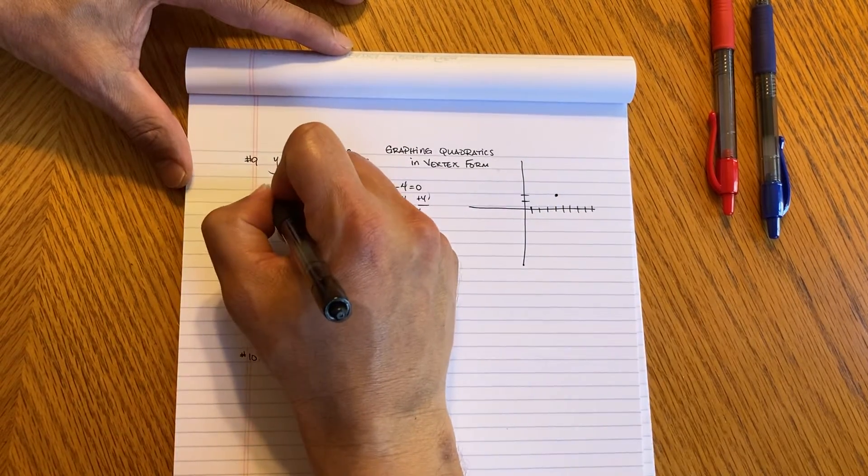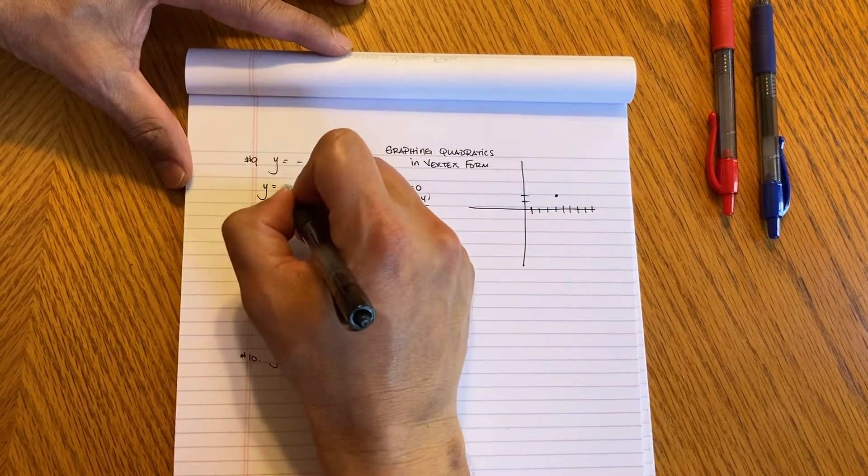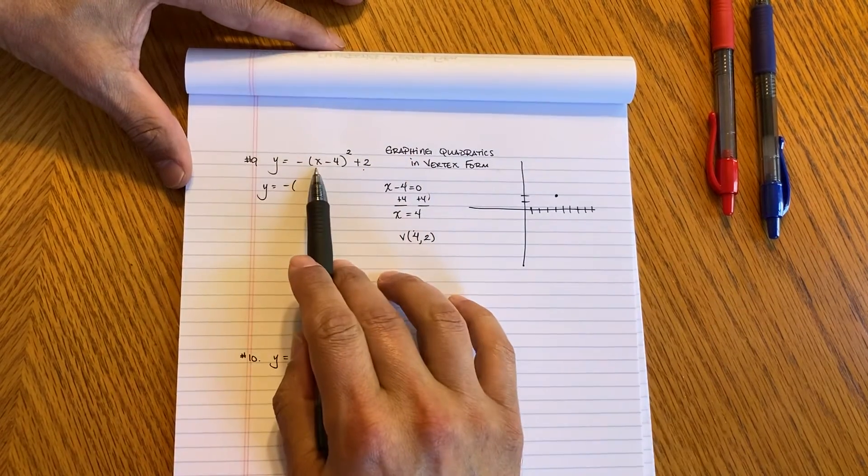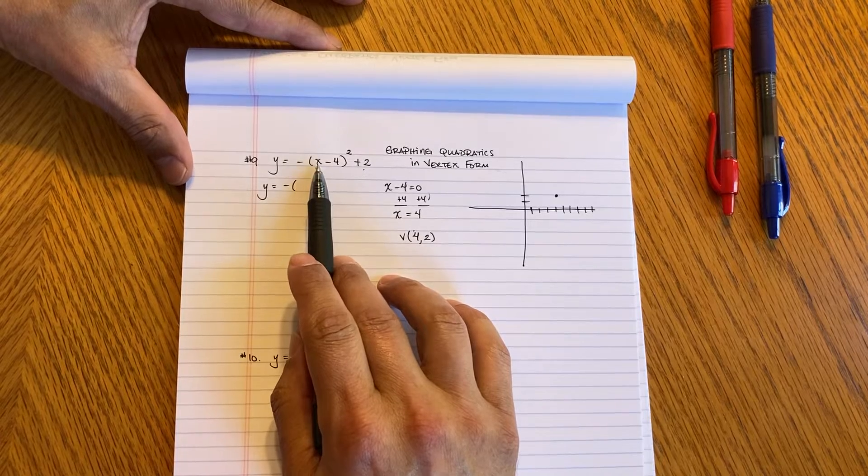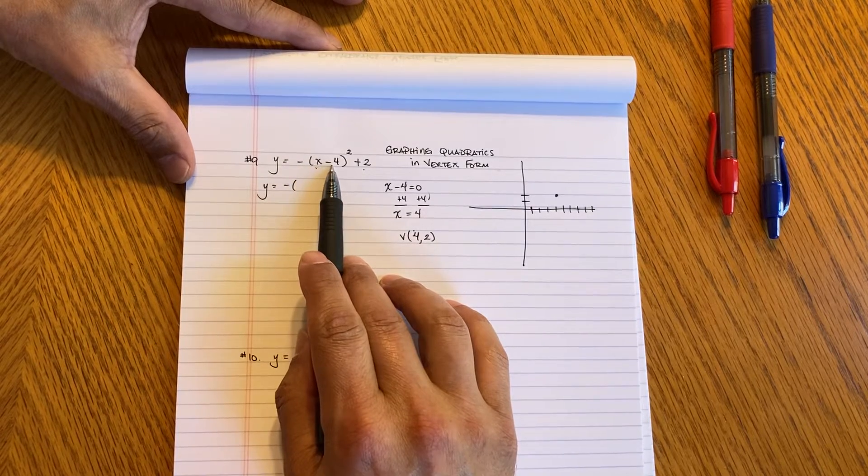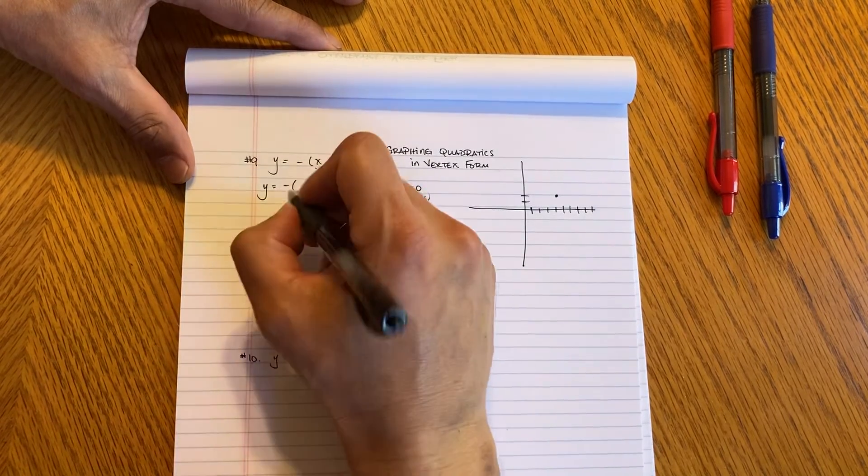So what you want to do is you want to work smarter not harder. Now here's an X in here minus 4. What I'm going to do is I'm going to pick maybe a 5 because 5 take away 4 is 1 and that's going to be very easy for me to work with.